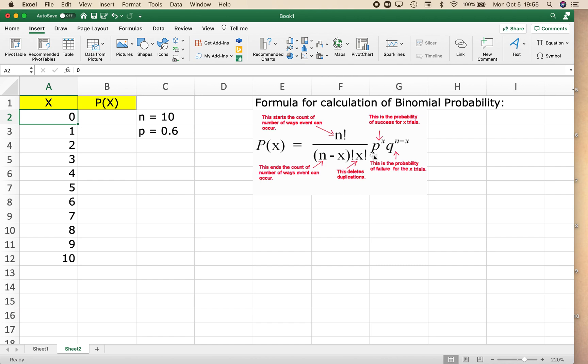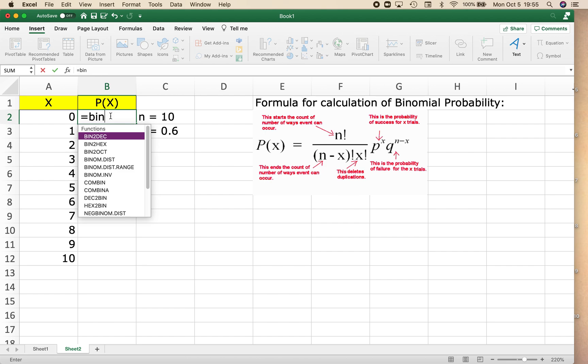So Excel is going to do this calculation for me to find the probability. So the probability that all of my attempts are failures. To find this probability, I'm going to do equals binom.dist, open parentheses.